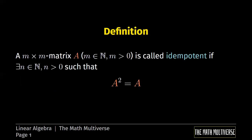An idempotent matrix is a square m times m matrix A such that A squared is equal to A. Don't forget that A squared simply means A times A. I am assuming you already know how to multiply matrices. If you don't know, don't worry because you will find in the description below the link to the video where we define the product of matrices.